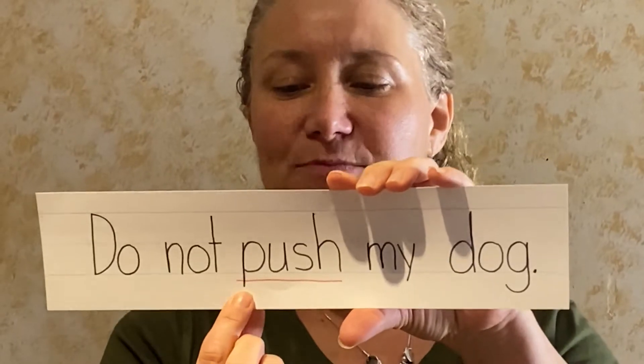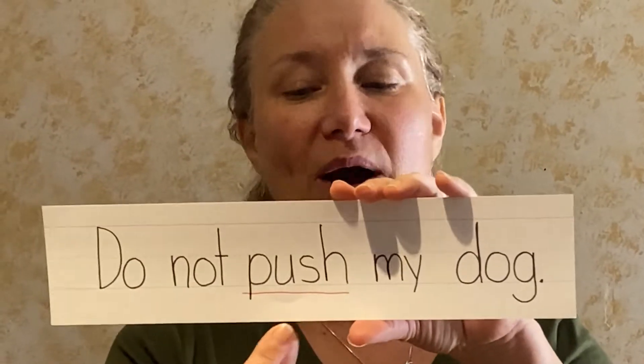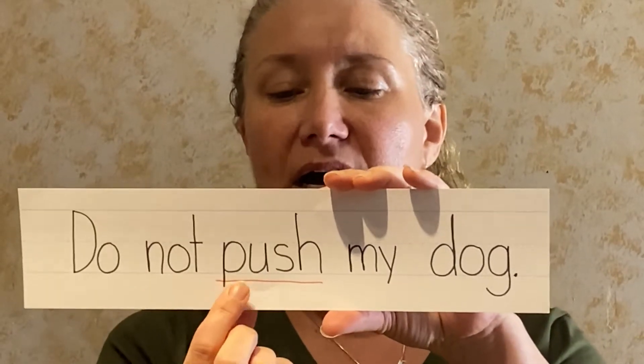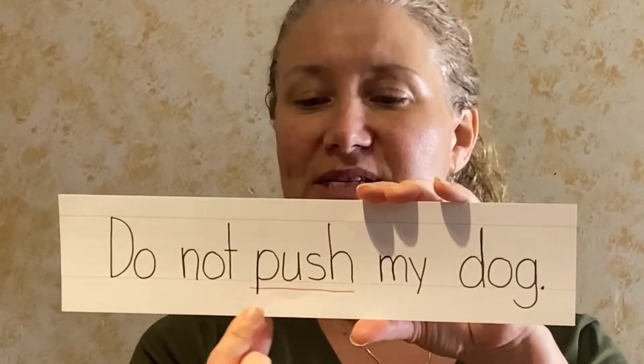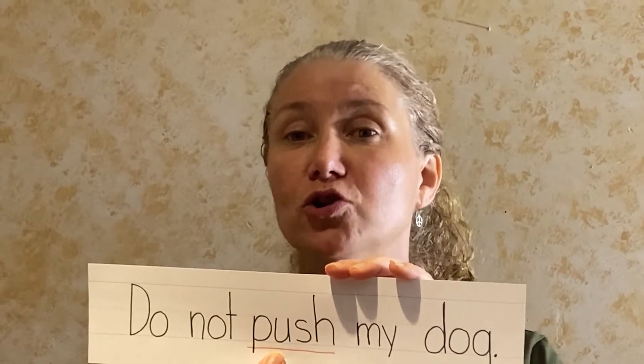The word underlined in red is push and it is spelled P-U-S-H. Let's see why it's a red word. If we stretched it we would say P-U-S-H, but that's not what we say. We say P-U-S-H. That's one of the sounds that the U can make, because vowels are tricky.